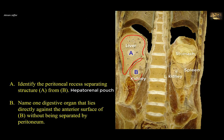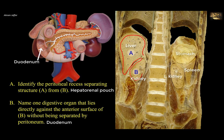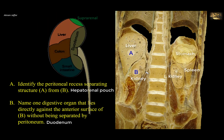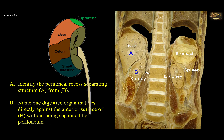Now, immediately, the anterior surface of the kidney is related to the duodenum, especially the second part of the duodenum, which is retroperitoneal. Most of the duodenum is retroperitoneal, and therefore it will be in direct contact with the kidney. The difference between the kidney and the duodenum is that the kidney is a primary retroperitoneal structure, while the duodenum is a secondary retroperitoneal structure. Also note that the anterior surface of the right kidney is related to the transverse colon and coils of jejunum. Since both the transverse colon and jejunum have mesentery, they are intraperitoneal and are not directly applied to the anterior surface of the kidney like the duodenum.